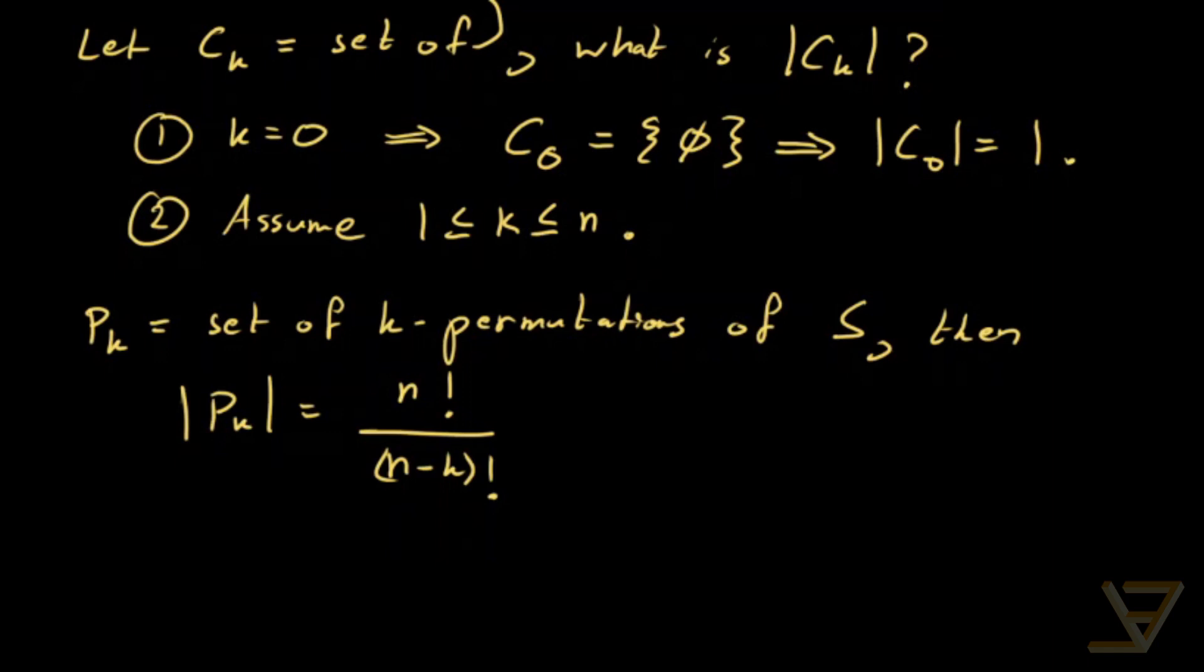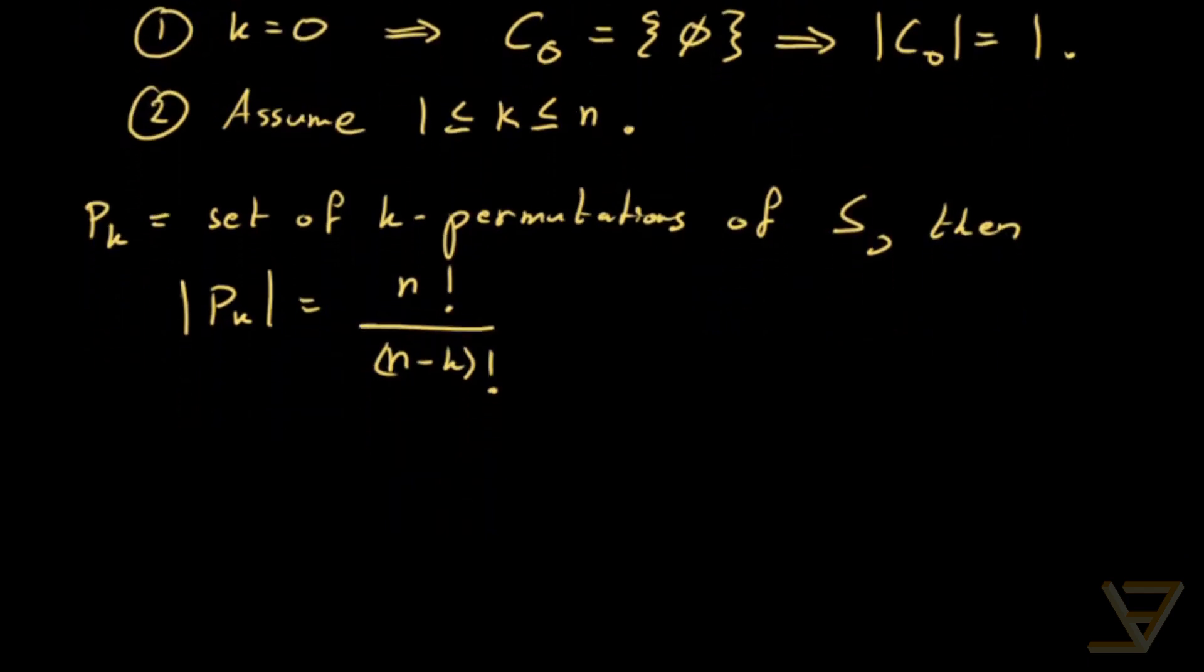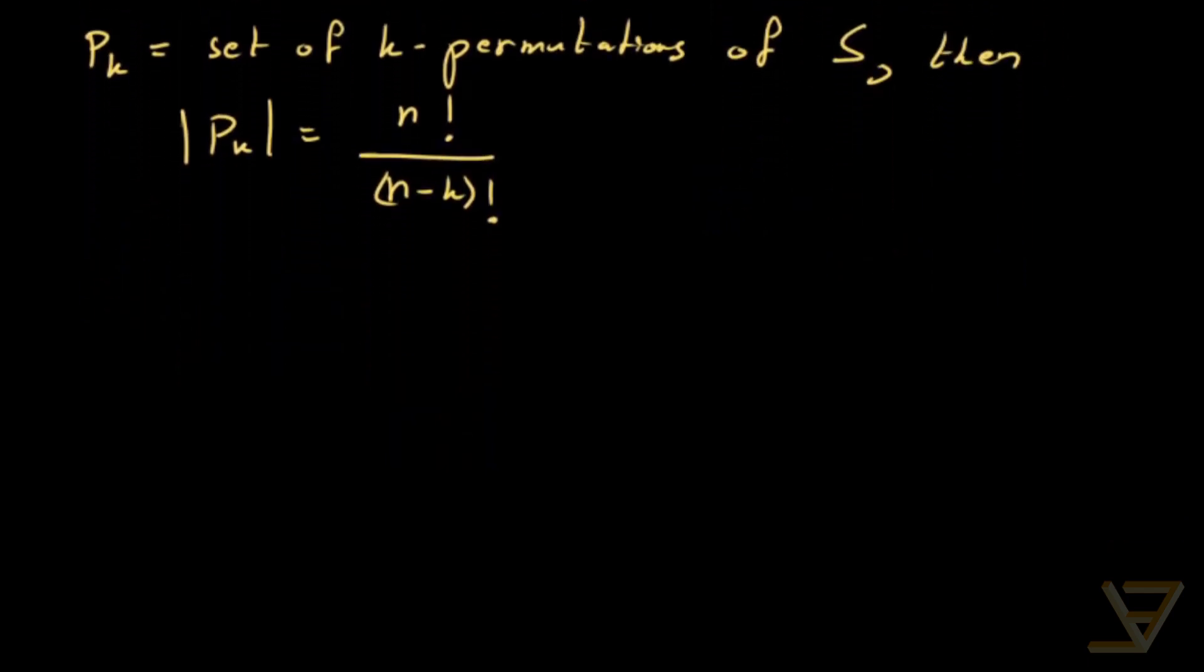So here's the idea. We're going to relate this to C_k in a way by describing a map from P_k to C_k, from the permutations of k elements to the combinations of k elements, k-combinations.